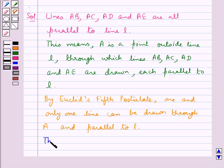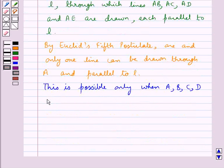This is possible only when the points A, B, C, D and E all lie on the same line. So when the points A, B, C, D and E lie on the same line, then only one line can be drawn from the point A which is parallel to the line L.